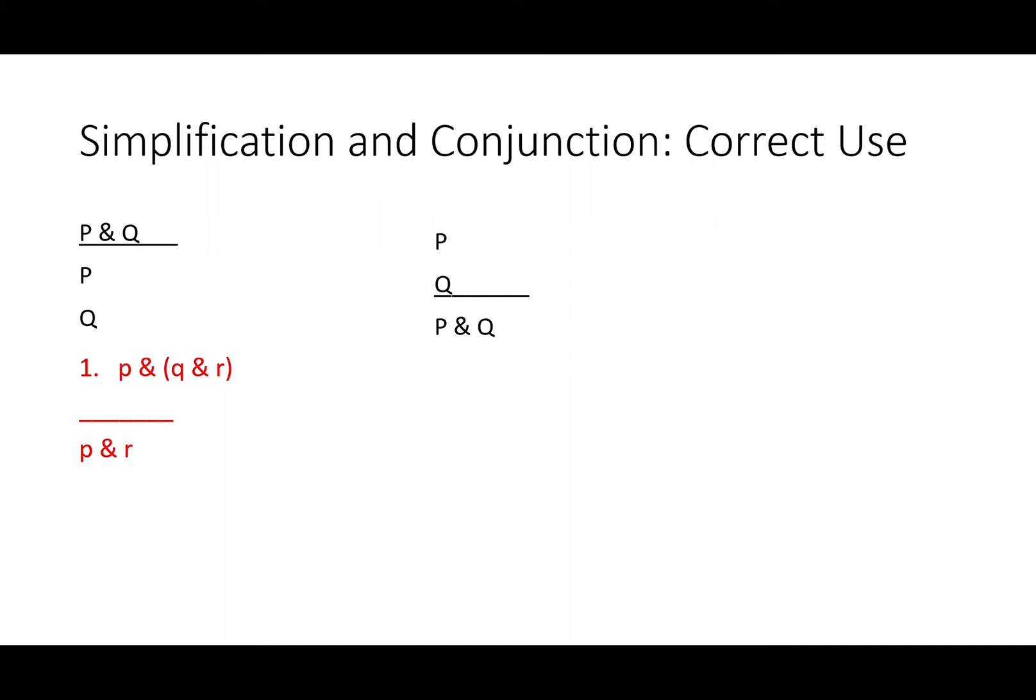Let's take a look at how simplification and conjunction might be used correctly. Here's a pretty simple argument: P and Q and R, therefore P and R. We're really just getting rid of Q, but we don't have a rule for that. So first we'll apply simplification and get P by itself, then we'll get Q and R by itself with simplification again. Now we'll simplify line 3 and get R by itself. Finally, we'll use conjunction with lines 2 and 4 and put P and R together. Later on we'll get rules that allow us to move parentheses or change the order of things connected by ampersand, but without those we can do this with a combination of simplification and conjunction.